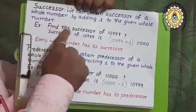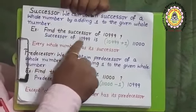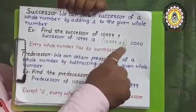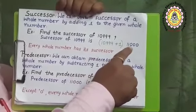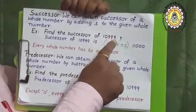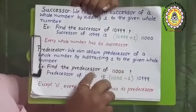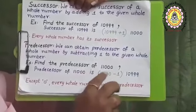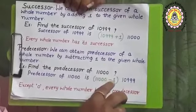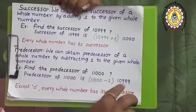For example, the successor of 10,999: successor means adding 1, so by adding 1 to 10,999 you will get 11,000. 11,000 is the successor of 10,999. In the same way, the predecessor of 11,000: predecessor means subtract 1 from the given number. Here the given number is 11,000, so subtracting 1 gives you 10,999. 10,999 is the predecessor of 11,000.